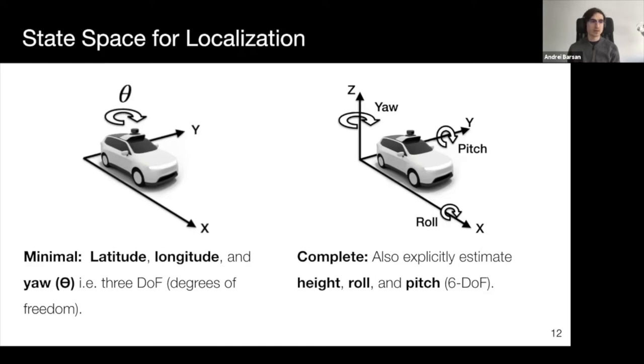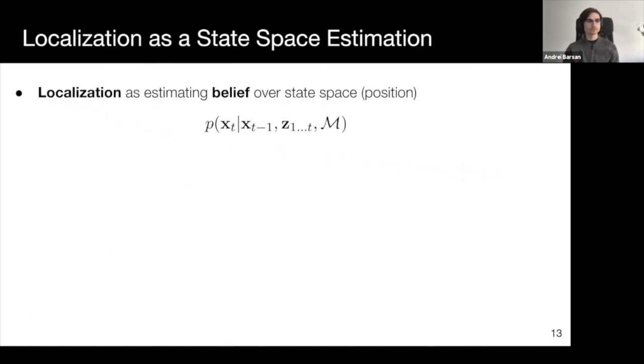It's worth pointing out that we don't care about just the point estimate of our localization, but we also want a confidence measure over the space. We want to use a probabilistic framework that would allow us to model uncertainty, to track multiple pose hypotheses, and to recover from failures. This is why we are motivated in casting localization as a probabilistic inference task, where we keep track of our belief over the entire, or at least a subset of the state space, as opposed to always just computing point estimates.